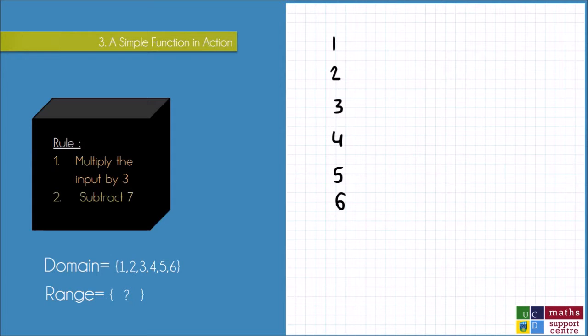So the first thing I do is multiply my input by 3, and then I subtract 7. So 3 by 1 is 3, take away 7, gives me minus 4. So I can write that as an input-output pair of 1, minus 4.